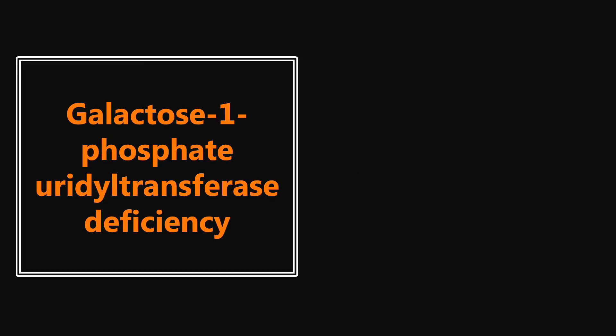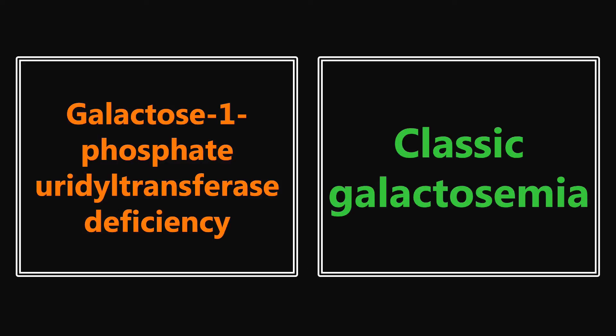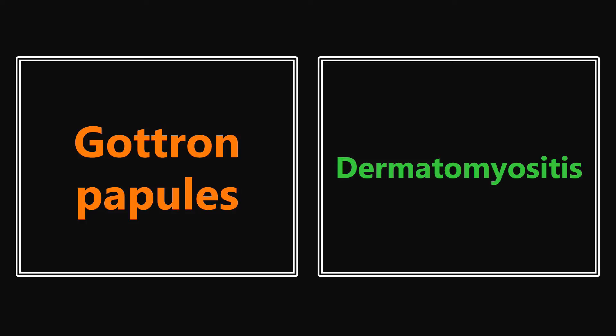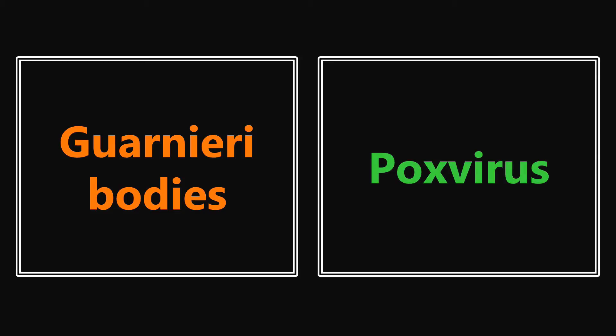Galactose-1-phosphate-uridyl transferase deficiency — if you see this, it's referencing classic galactosemia. There are other types of galactosemia as well, but this is the one seen most commonly and that enzyme deficiency is associated with it. Gottron papules are in reference to dermatomyositis. Guarnieri bodies — if you see this in a question or on histology, they're talking about a poxvirus infection of some sort.